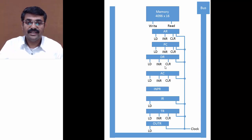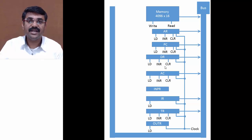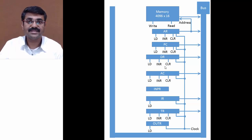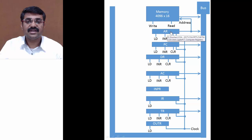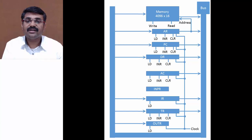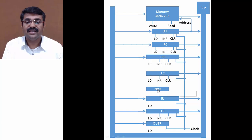These registers and memory output data to the bus — so they are all connected to the bus. These outputs are placed onto the bus based on certain signals, because our bus is multiplexed. The output of the AR register is also given directly to the memory to point to it. The inputs to registers from the bus — memory, AR, PC, DR, IR, TR, OUTR — all receive inputs from the bus.